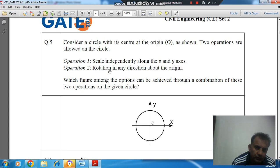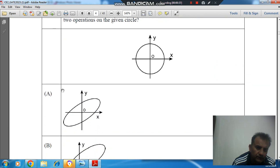Operation 2: Rotation in any direction about the origin. Which figure among the options can be achieved through a combination of these two operations on the given circle?